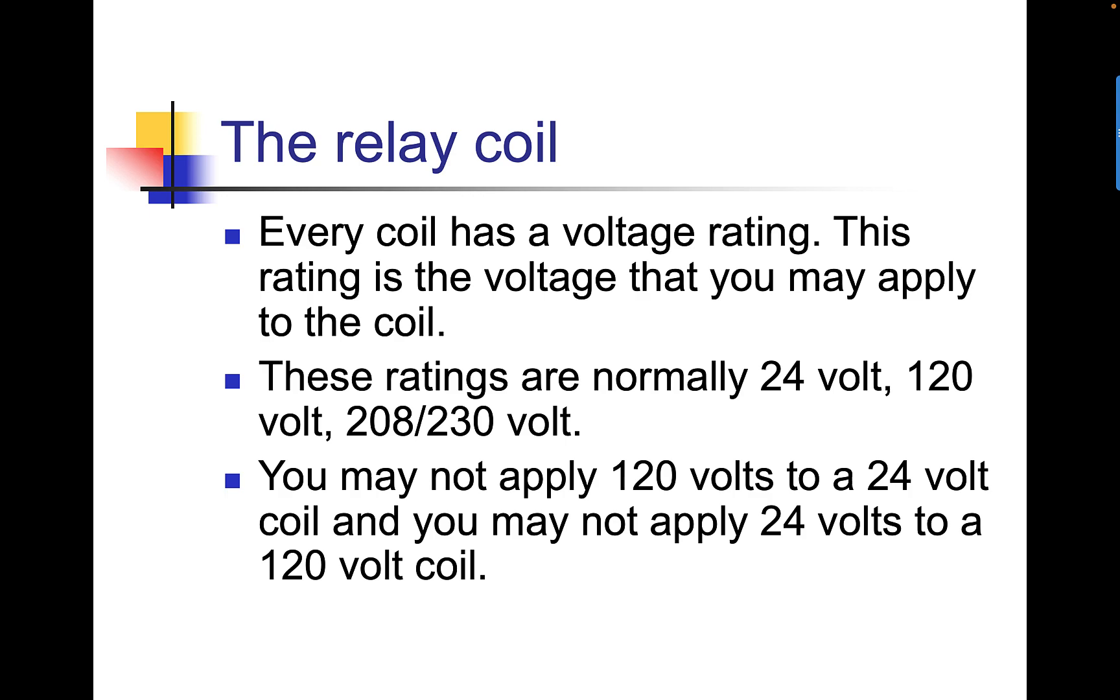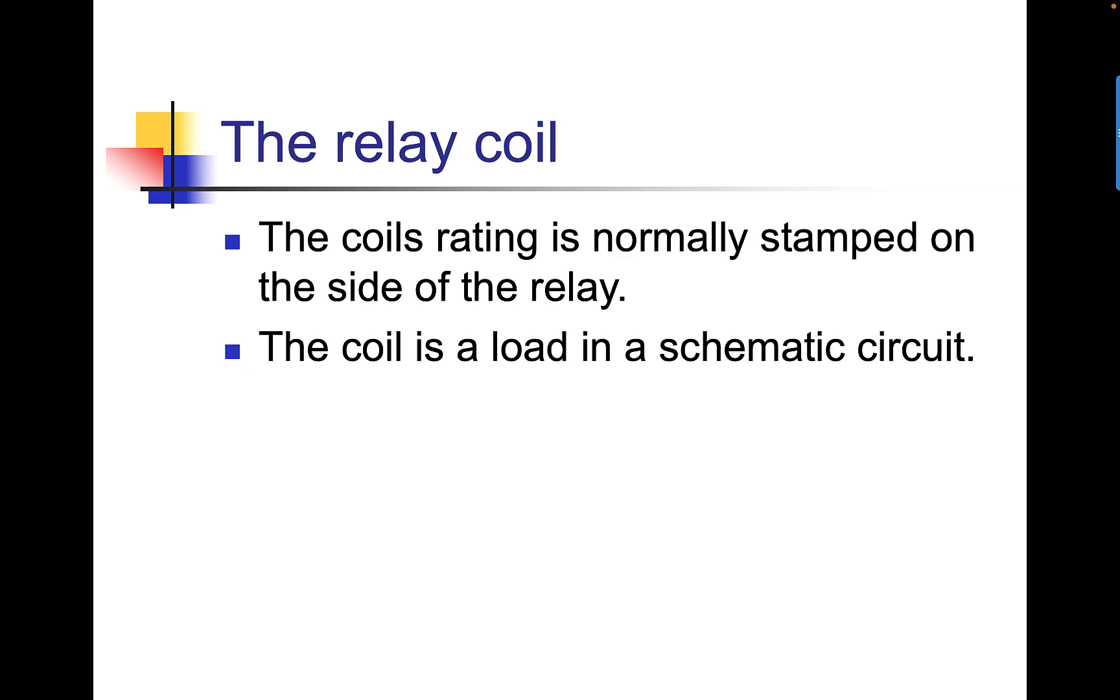The relay coil has a voltage rating. This rating is the voltage that you may apply to the coil. In HVAC, these ratings are normally 24, 120, or 208/230 volts. You cannot apply 120 volts to a 24-volt coil, and you can't apply 24 volts to a 120-volt coil. Bad things happen. You let the smoke out of things. The coil rating is normally stamped on the side of the relay.